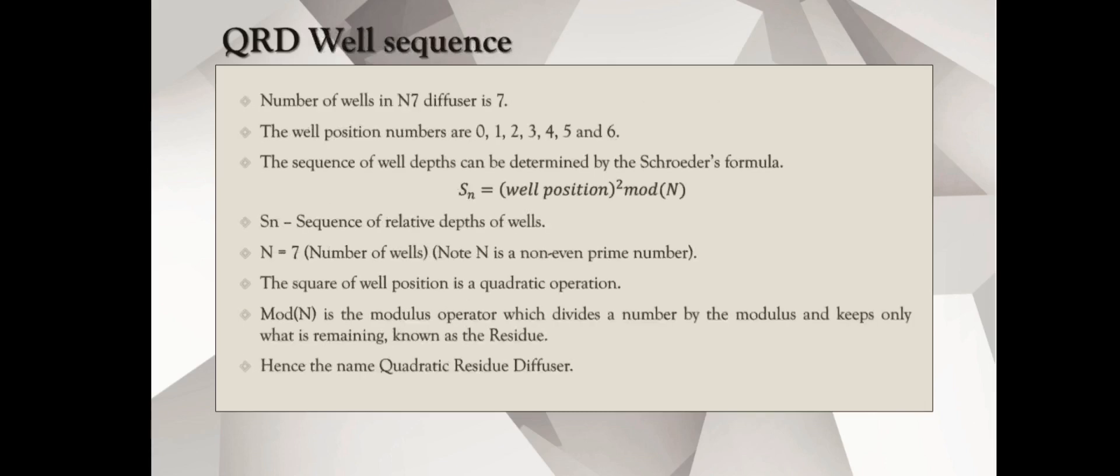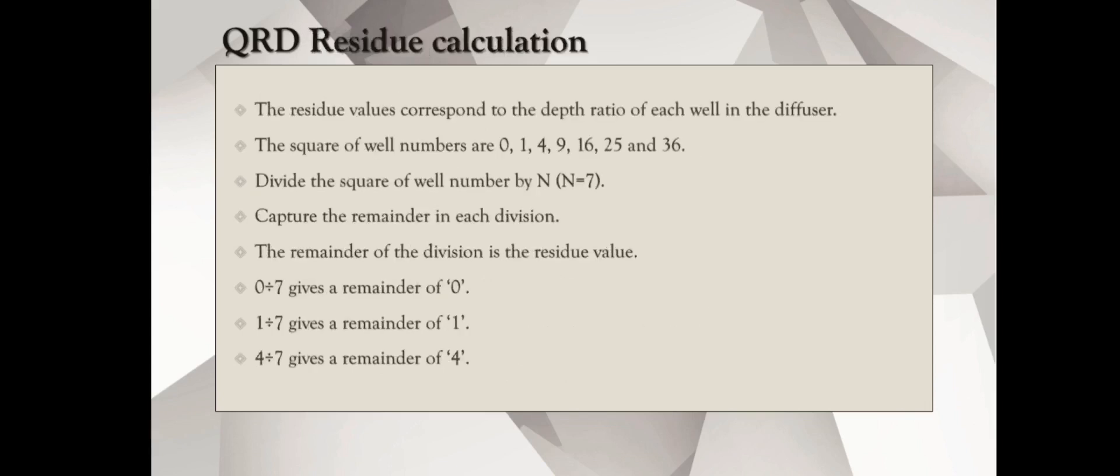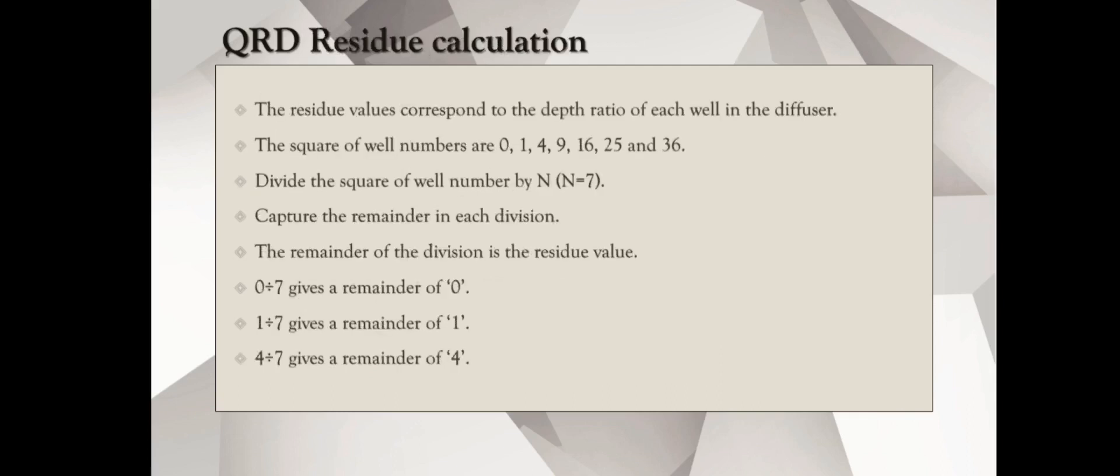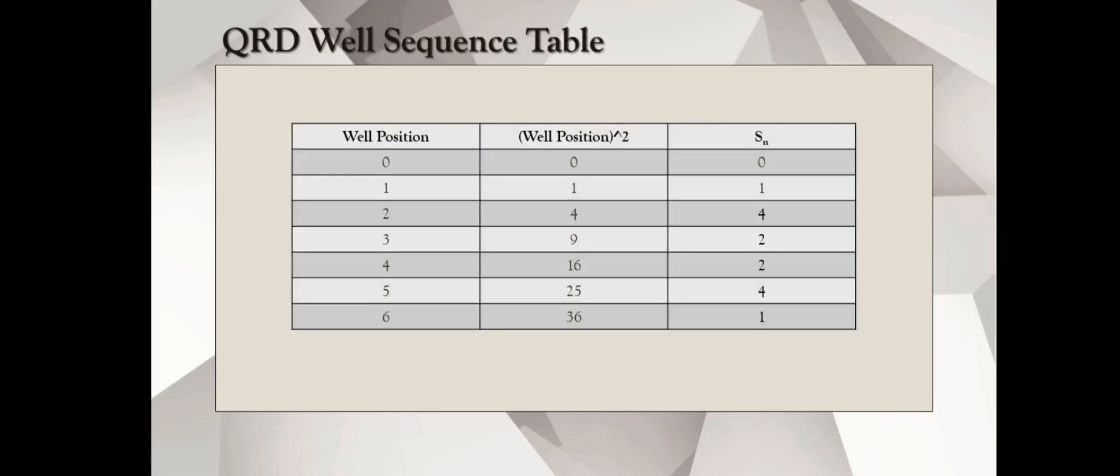First, we follow the equation for Sn. What we've got to do is we've got to square the well position. We know the well position is from 0 through 6. If we square that, we get the sequence 0, 1, 4, 9, 16, 25, and 36. Next, what we've got to do is we've got to take the modulo of that well position squared. What we do is we divide that particular square of the well by 7 and only capture the remainder. For example, the first square of the well is 0. So, 0 divided by 7 gives a remainder of 0. And 1 divided by 7 gives a remainder of 1. 4 divided by 7 gives a remainder of 4. We're only capturing the remainder because that's what we're interested in to determine the sequence. If you repeat that calculation for all the well positions, square the well position, take the modulo, you get the sequence 0, 1, 4, 2, 2, 4, 1. That's the relative well depth.